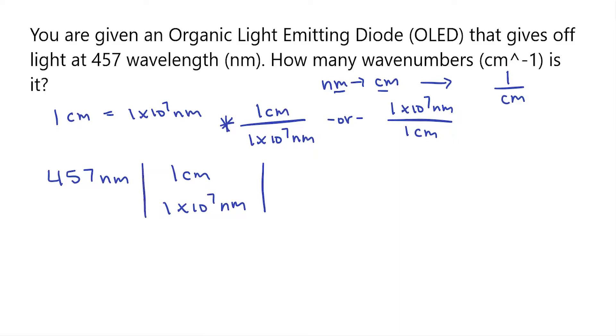Let's solve this problem. 457 times 1 is 457. I have to multiply my units, so that will be nanometers times centimeters. And then on the bottom, I just have my 1 times 10 to the 7 nanometers. Since I have nanometers on top and bottom, those are going to cancel out, leaving me only with units of centimeters, which is exactly what I wanted to do.